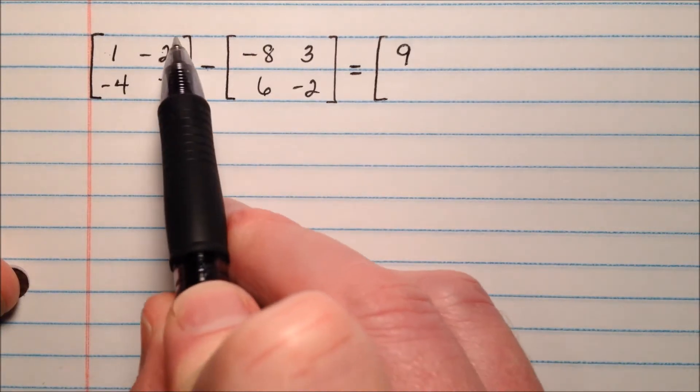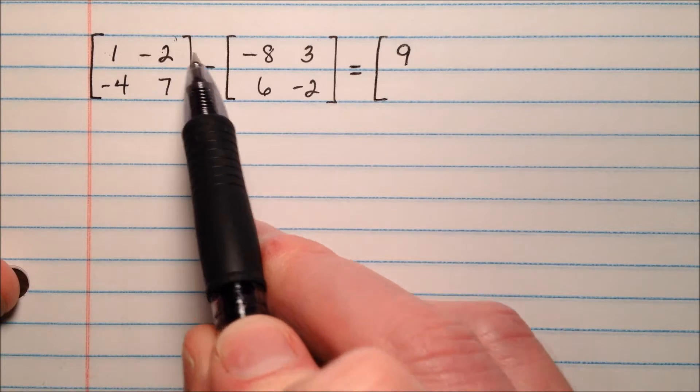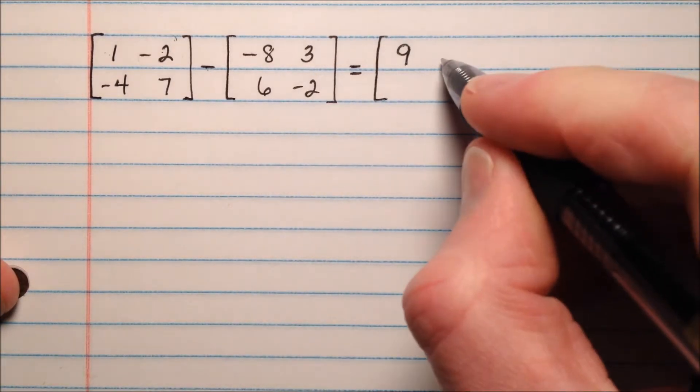First row, second column, a negative 2 and a 3, so negative 2 minus 3, that's going to be a negative 5.